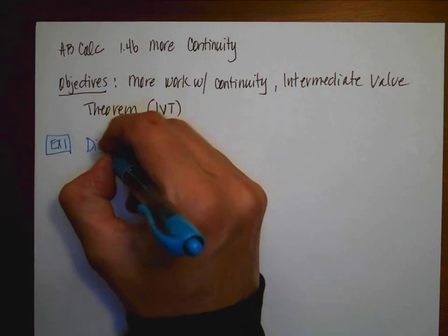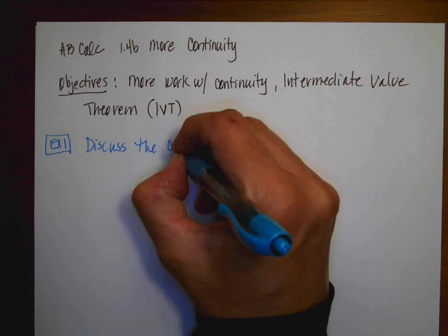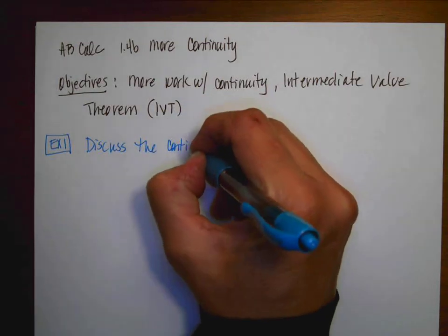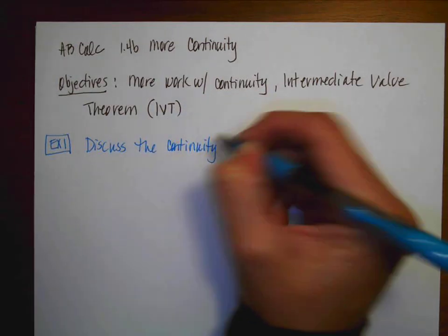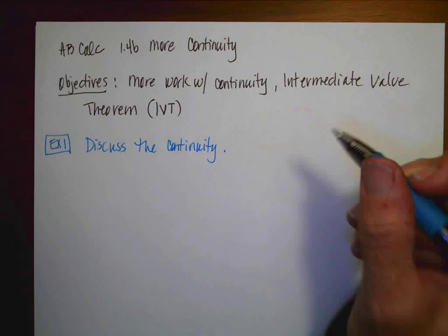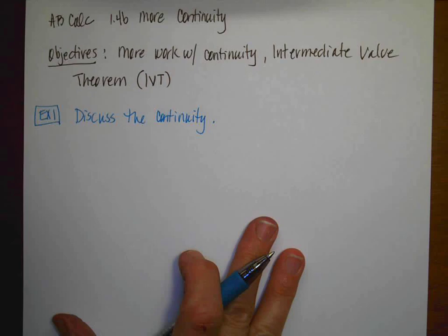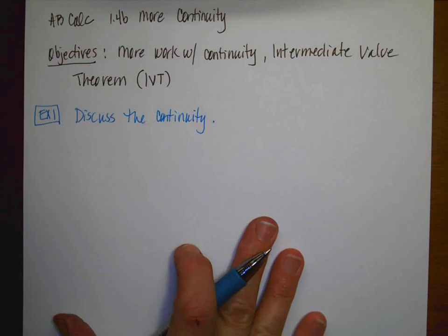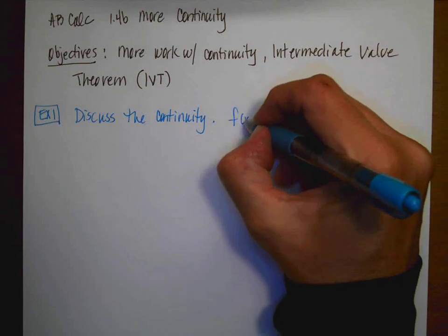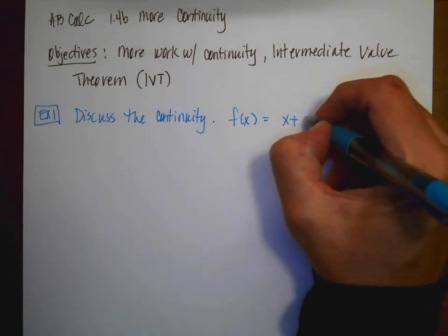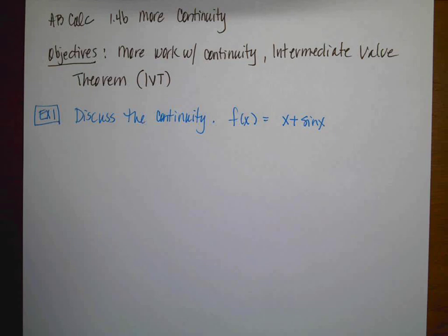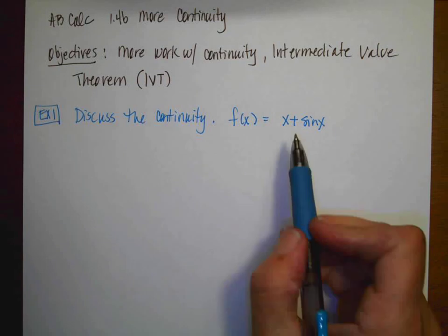So let's just jump right in with our first example, and it says discuss the continuity. Remember yesterday we talked a lot about you need to make sure that you answer the specific question that's asked. Therefore, if they say discuss the continuity, you have to make a statement about where the function is continuous. Your function is going to be f(x) = x + sin(x).